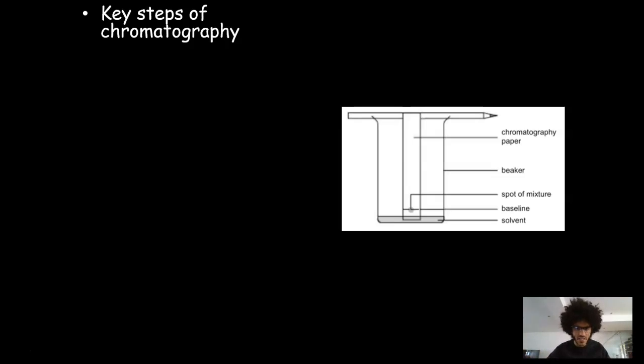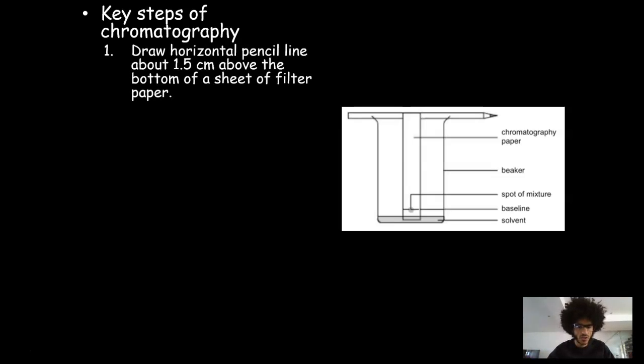So in terms of the steps that you need to mention in your method, the first thing you have to do is draw a horizontal pencil line. Now I've written here about 1.5 centimeters above the bottom. It doesn't really matter how specific you are in your exam answer. You could write two centimeters or one centimeter. 1.5 is generally fine, or an inch. And it has to be on a filter paper. You could also call it chromatography paper, or if you're going to be really fancy, call it a chromatogram.